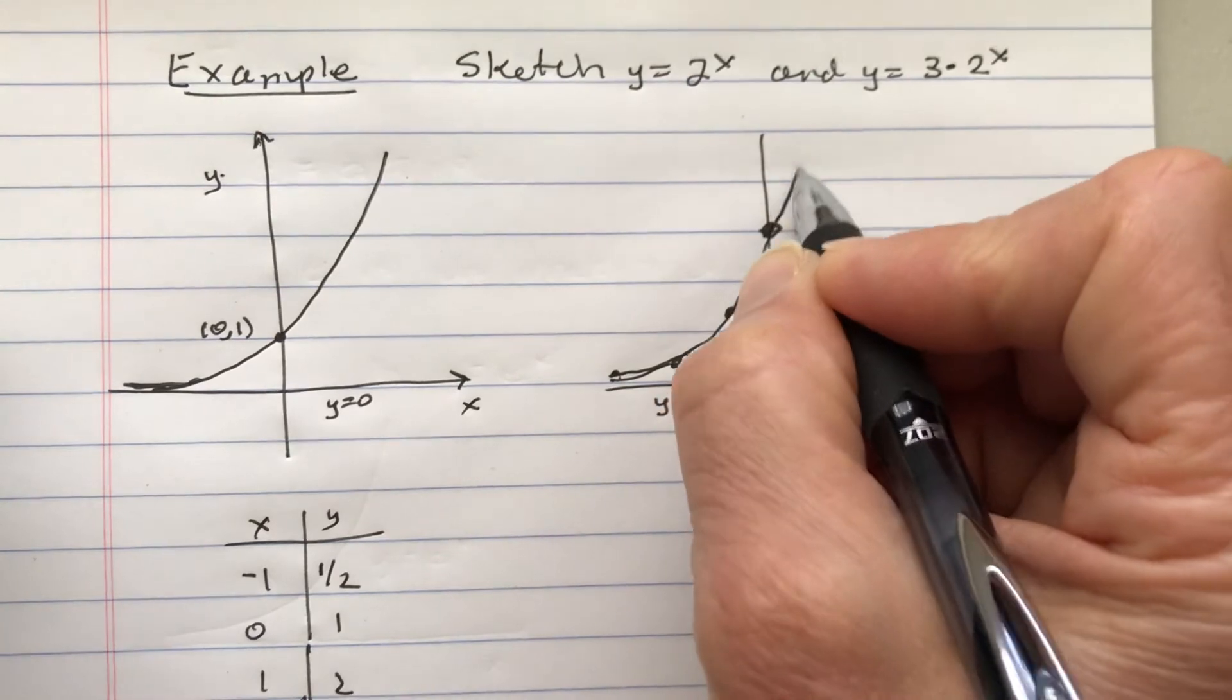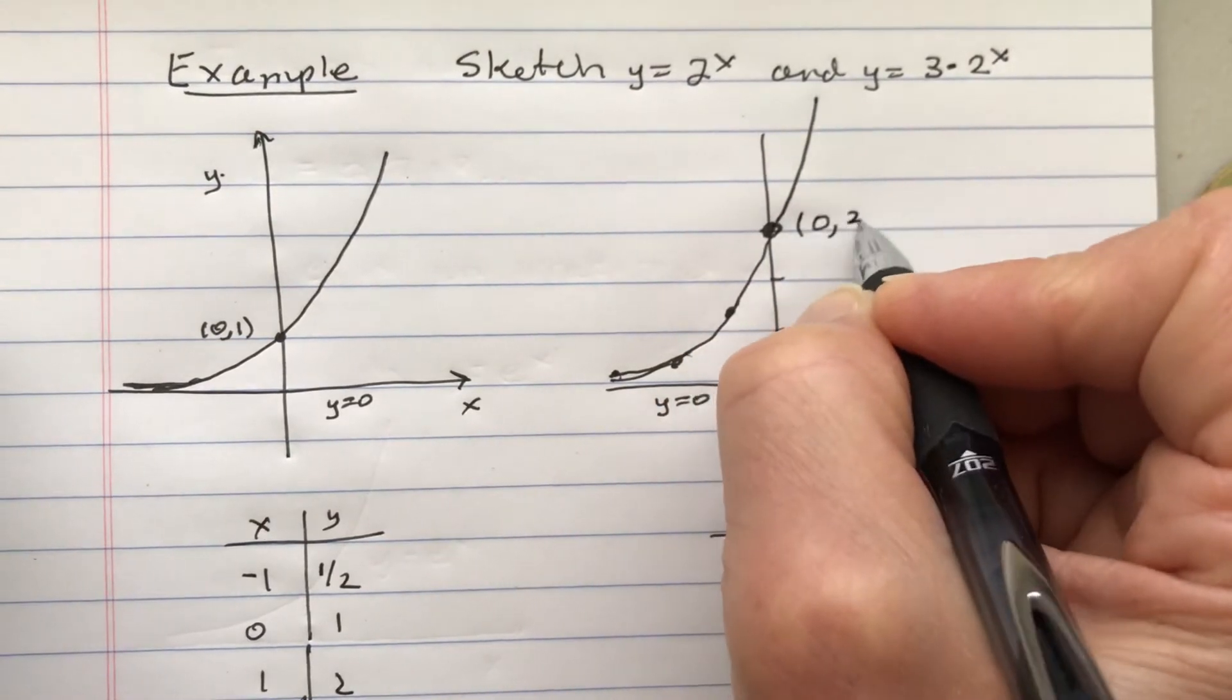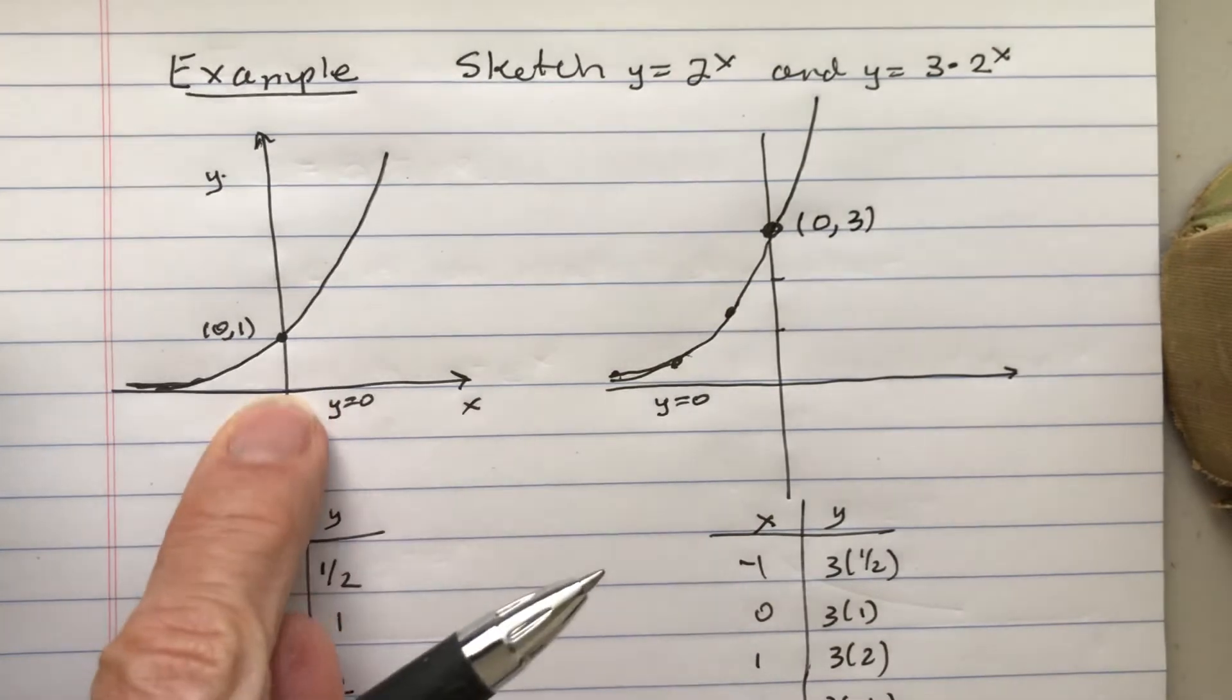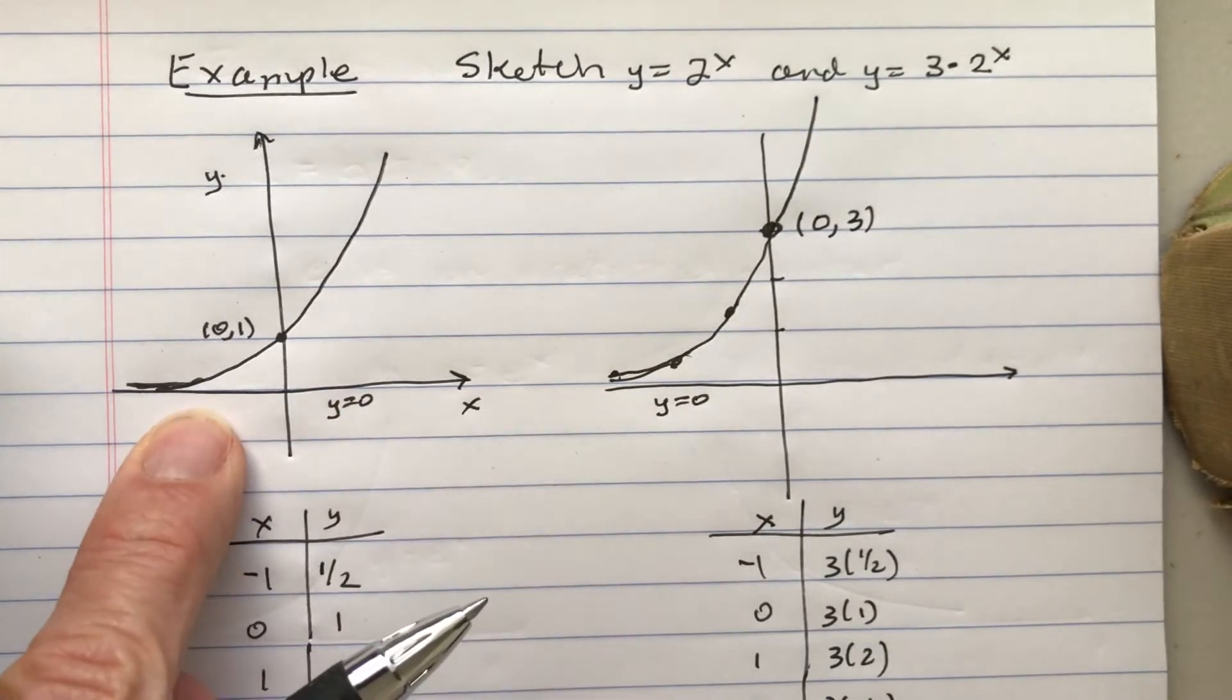And so this whole thing goes like this. So what looks different? They're both increasing. They both have the same horizontal asymptote.